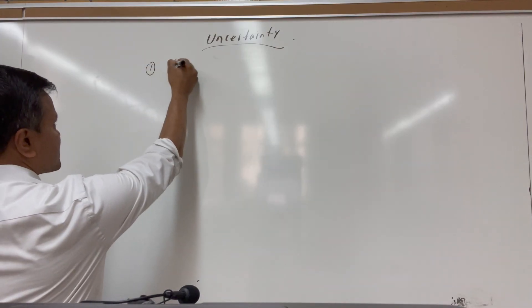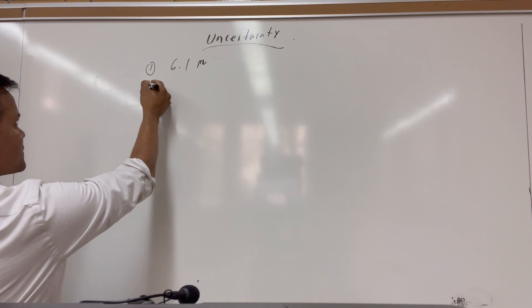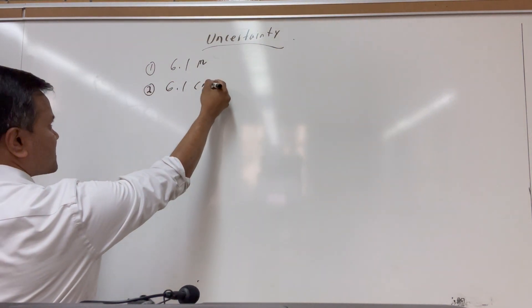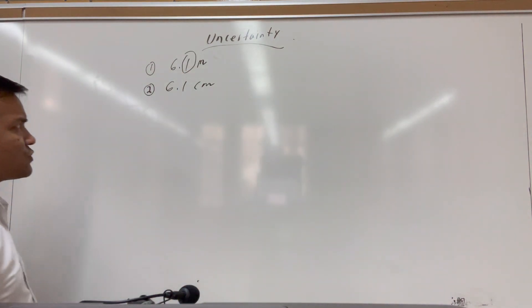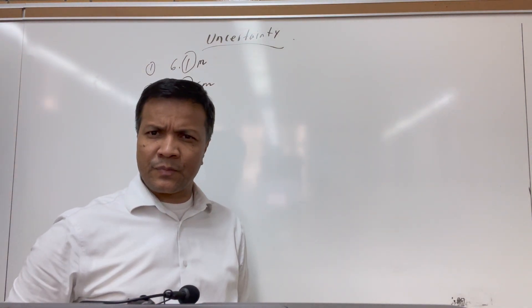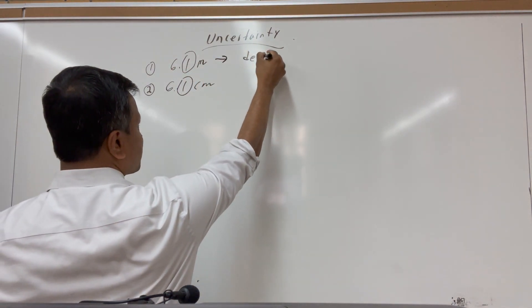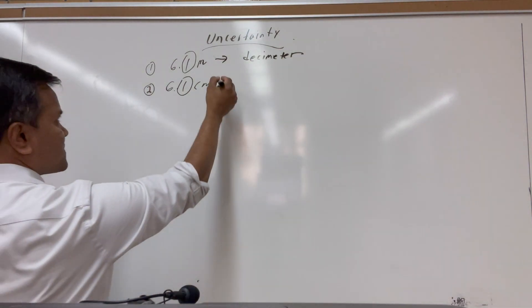Today our topic is measurement, and we're going to talk about uncertainty. Let's start with a question. I'm going to write two statements on the board and you're going to find the difference between them. Statement number one is 6.1 meters and statement number two is 6.1 centimeters. What does the digit '1' represent in each case? In 6.1 meters, the '1' represents a decimeter. In 6.1 centimeters, the '1' represents a millimeter.